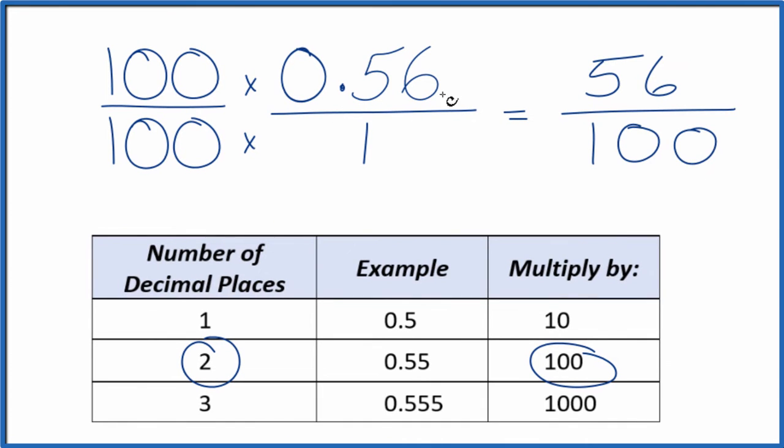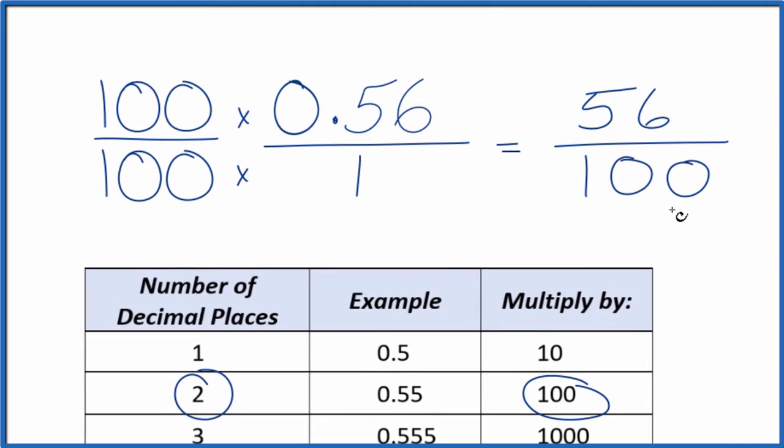100 times 1 is 100. So 0.56, the decimal, as a fraction is 56 over 100. But this isn't in lowest terms, so we can reduce this further. Let's do that.